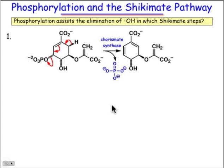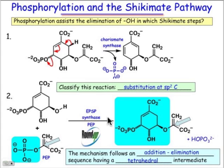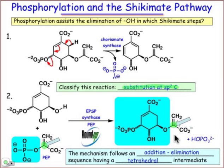The second and much more interesting example is the substitution reaction shown here. We're going to do a substitution reaction on the phosphoenolpyruvate sp2 carbon. We're going to take that sp2 center and replace the phosphate group with the hydroxyl group on this shikimate acid. The mechanism, as we'll see, takes place by an addition-elimination process.